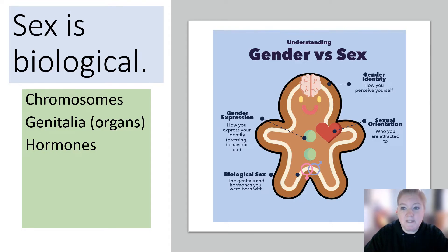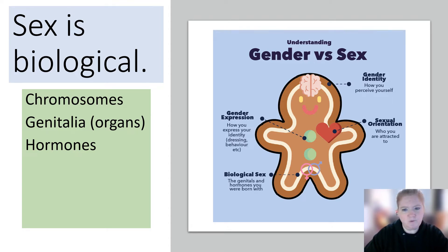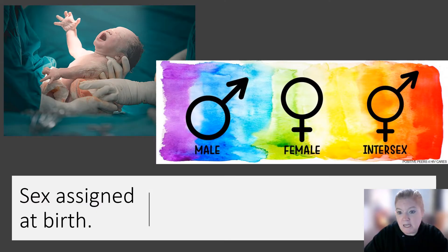Sex is biological, but it's not as simple as some people think. It's your chromosomes, your genitalia — internal and external organs — and also hormones, receptors, and a whole slew of things. Sex assigned at birth could be male, female, or intersex.